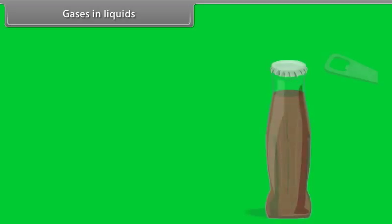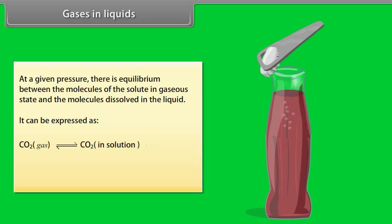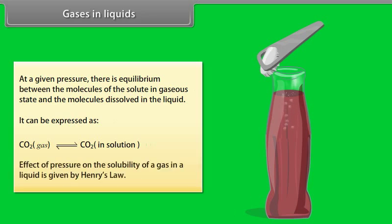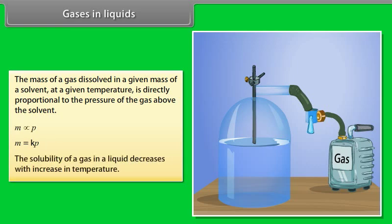Gases in Liquids: When a cold drink is opened, the carbon dioxide dissolved fizzes out rapidly — this represents an equilibrium situation. At a given pressure, there is equilibrium between molecules of solute in gaseous state and molecules dissolved in liquid. The effect of pressure on solubility of a gas in a liquid is given by Henry's Law: the mass of gas dissolved in a given mass of solvent at a given temperature is directly proportional to the pressure of the gas above the solvent: M = KP. The solubility of a gas in a liquid decreases with increase in temperature.